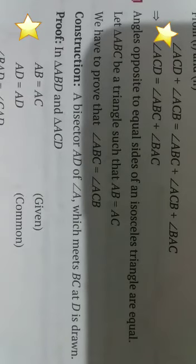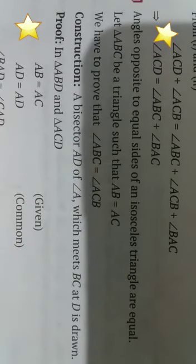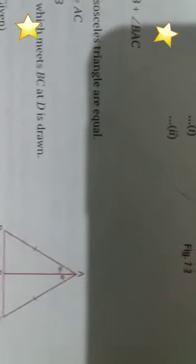From both these results, we can say angle ACD plus angle ACB equals angle ABC plus angle ACB plus angle BAC. We also know that angles opposite to equal sides of an isosceles triangle are equal — this property is known to us. If we know this property, we can directly look at the figure and solve.